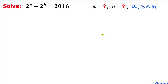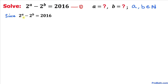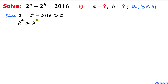Let's go ahead and get started with the solution. Let me call this equation number 1. Scanning this equation, we can see that 2^a minus 2^b equals 2016, which is greater than 0, so 2^a is greater than 2^b, meaning our a value is going to be bigger than b.